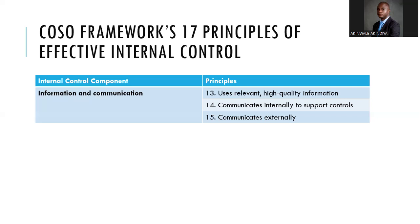Principle fifteen: communicate externally. Your problems will not always come from within — they can come from outside the organization. Most international standards and frameworks now place a lot of emphasis on third-party risks, vendor risks, procurement risks, and supply chain risks. You also need to manage relationships outside the organization: your vendors, the general public, your customers, the government, and all external stakeholders.